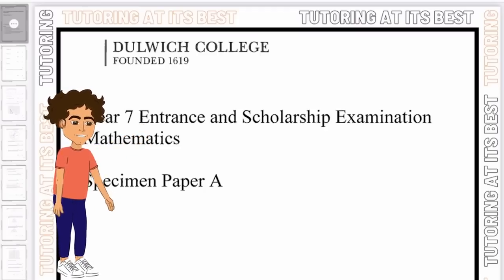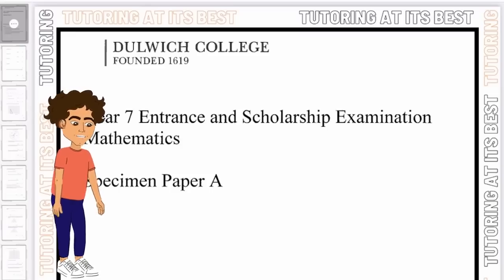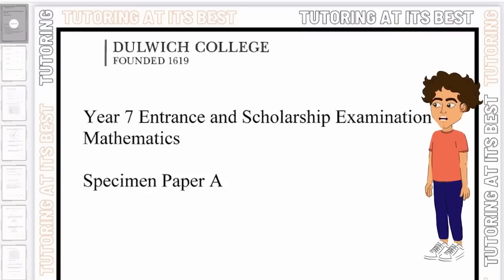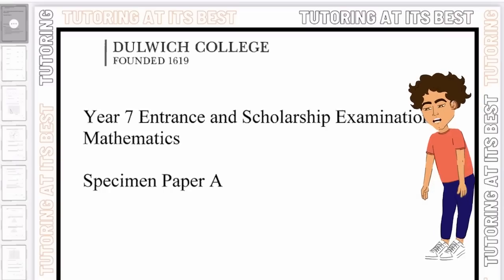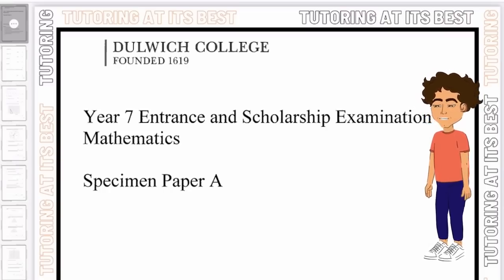Alongside that you will also have the English and mathematics papers. The CAT 4 test aims to assess developed abilities via modules testing your verbal reasoning, your non-verbal, spatial and quantitative reasoning.